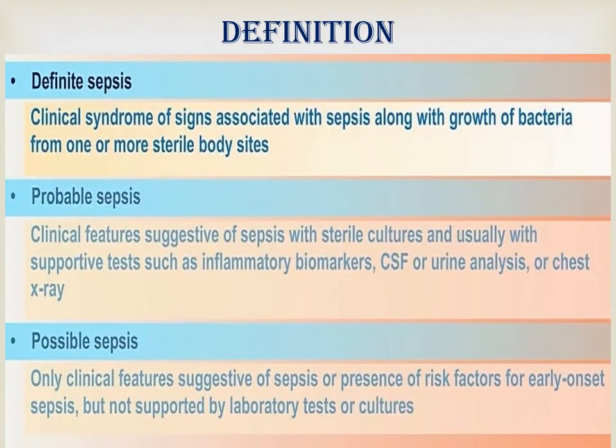Neonatal sepsis refers to an infection involving the bloodstream in a newborn infant less than 28 days old, and it remains a leading cause of morbidity and mortality among newborns, especially in middle and lower income countries. We define neonatal sepsis based on clinical signs and symptoms and also based on culture growth. Definite sepsis is defined as a clinical syndrome of sepsis associated with growth of bacteria from one or more sterile body sites.